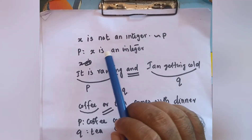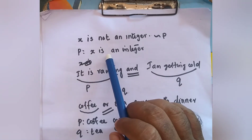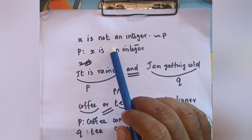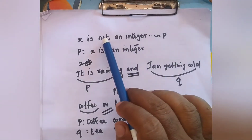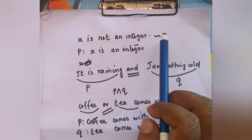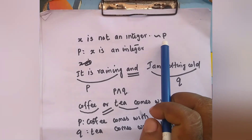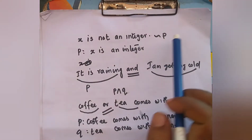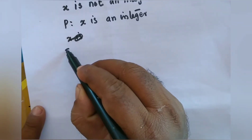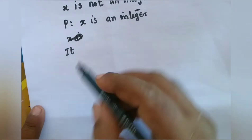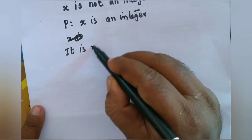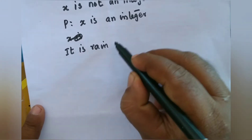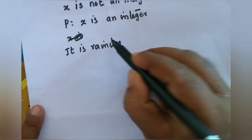The second example is 'it is not an integer.' This is a negative sentence — it contains 'not'. So we take P as 'x is an integer', then 'x is not an integer' becomes negation P (¬P). If a statement contains 'not', we apply the negation symbol.